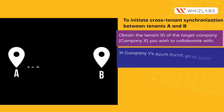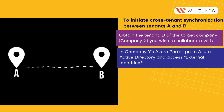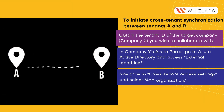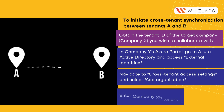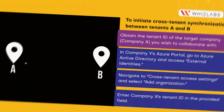In Company Y's Azure portal, go to Azure Active Directory and access External Identities. Navigate to Cross-Tenant Access Settings and select Add Organization. Enter Company X's tenant ID in the provided field.